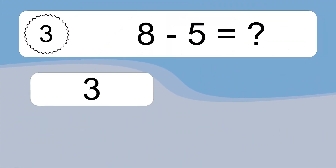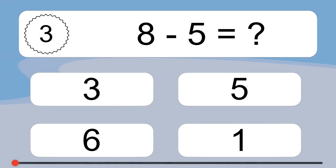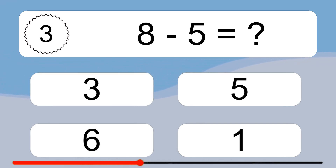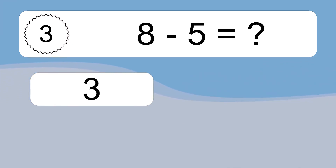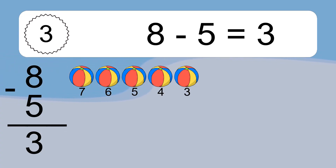8 minus 5 equals what? 8 minus 5 equals 3. Let's count it: 7, 6, 5, 4, 3.